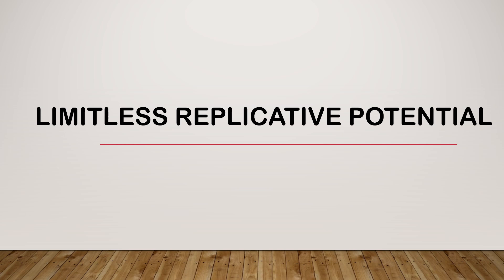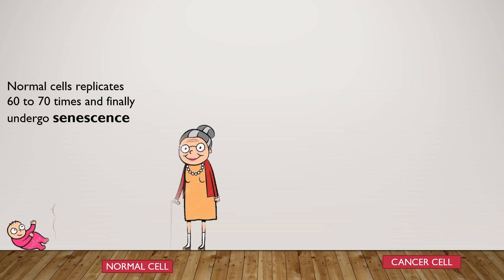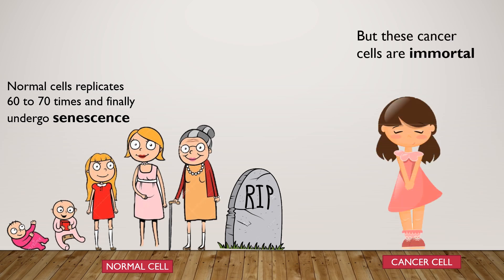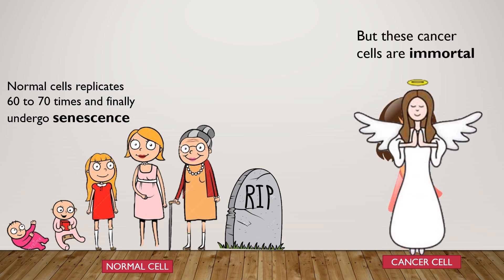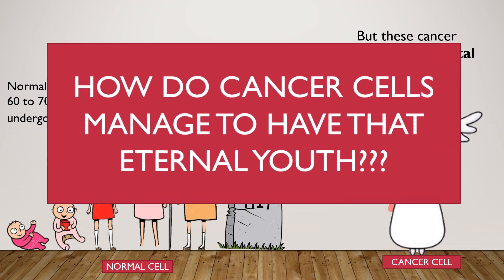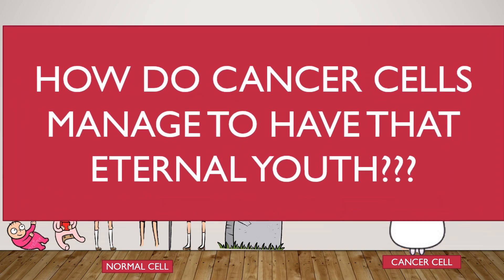This is one among the eight hallmarks of cancer. Normal cells replicate 60 to 70 times and later undergo senescence. But cancer cells are immortal. Let's find out how cancer cells manage to have that eternal youth.